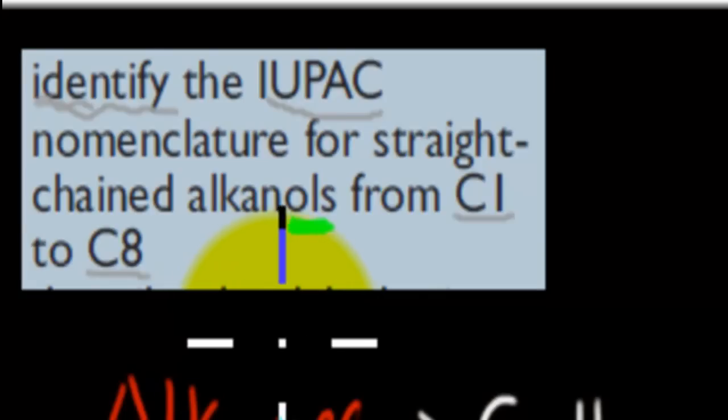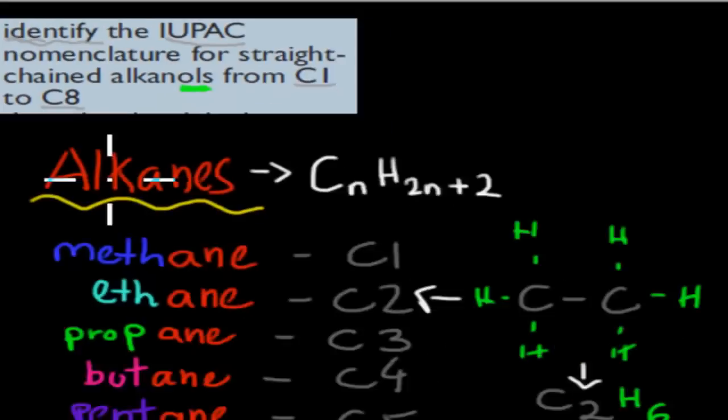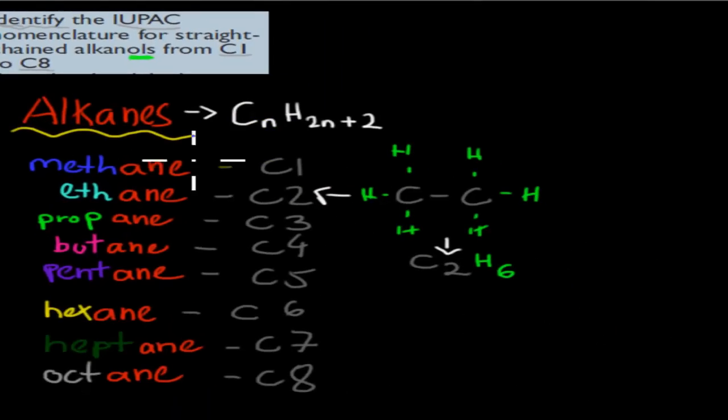Before we start to talk about alkanols we'll go over what alkanes were again. Alkanes were these ones: methane, ethane, propane, butane, pentane, hexane, heptane and octane, the ones that end up with that "-ane" suffix, and that meant it was an alkane.